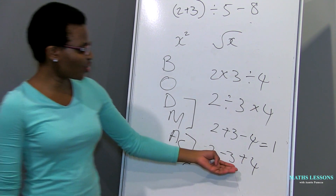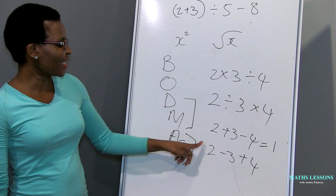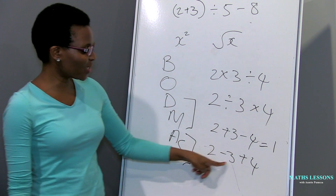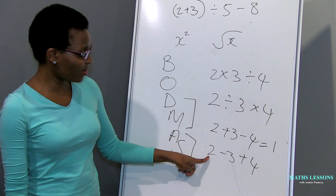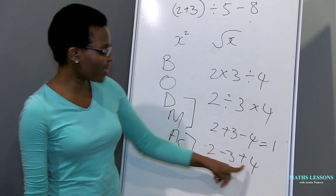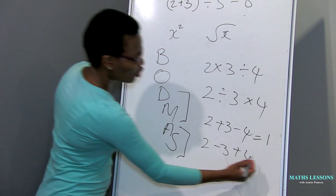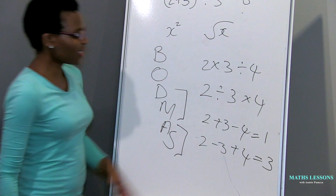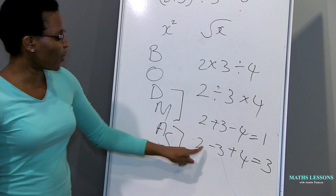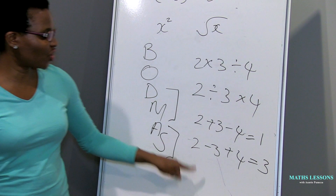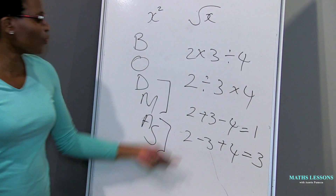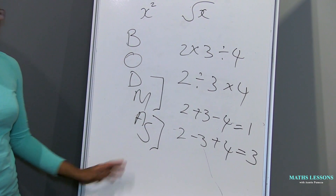And two minus three plus four: the signs are different — plus and minus — so we subtract and take the sign of the bigger number, giving us minus one. Then minus one plus four equals three. Do you see that you get different answers with the same numbers, just because of where the operations are positioned? So remember, BODMAS is very important and we are going to apply it every time we solve problems.